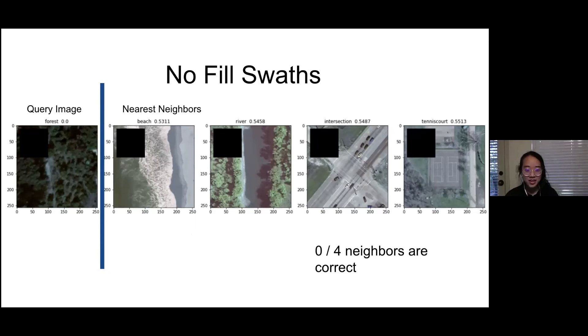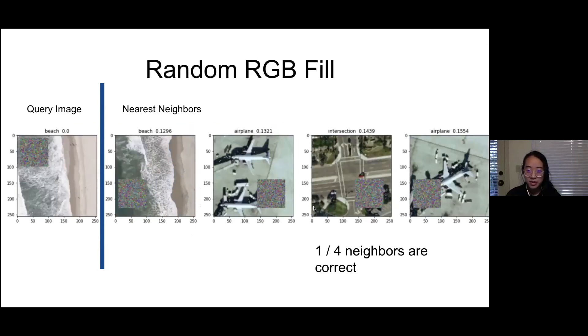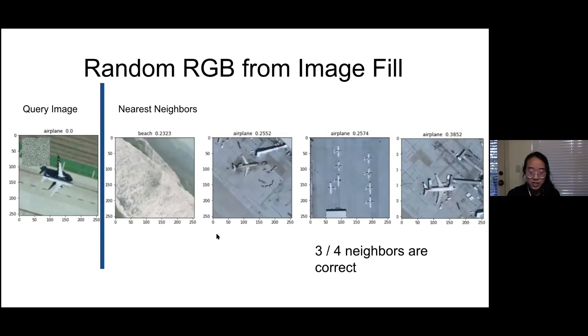Now comes our filling strategies. Like Sarah said earlier, we started off by filling the empty swaths with random RGB values. The results are a little bit better than the swath training data with the autoencoder correctly identifying one of the nearest neighbors. Next, we tried our second filling method, taking RGB values from other parts of the image. And this was another step up from the previous method, with the autoencoder correctly identifying three of the image categories.